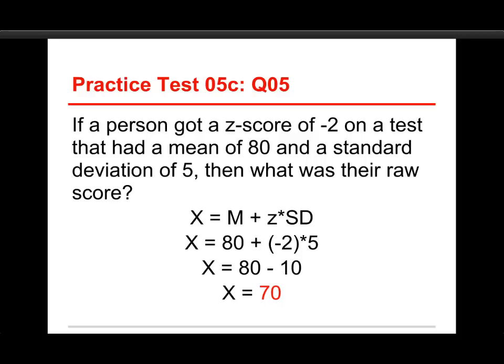Again, this is simply a rearranged version of the z-score formula, except instead of solving for z, we're solving for x. And so you put x is equal to the mean plus z times the standard deviation, so a certain number of standard deviation units above or below the mean. In this case, we have a mean of 80, so we put that there first.